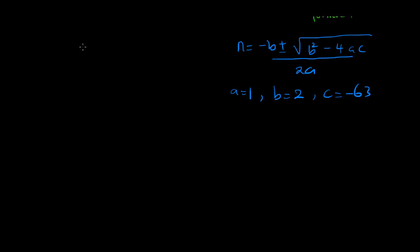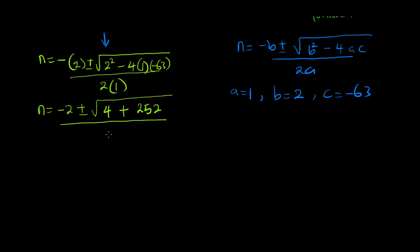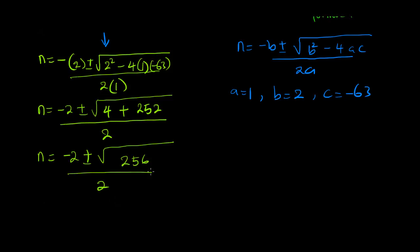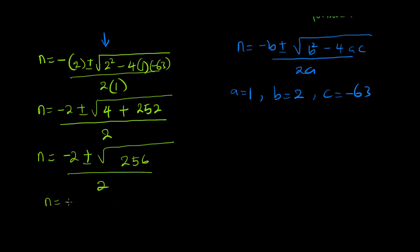Applying the quadratic formula: n equals minus b plus or minus √(b² minus 4ac), all over 2a. Substituting: n equals minus 2 plus or minus √(4 minus 4 times 1 times minus 63), all over 2. The discriminant becomes 4 plus 252 equals 256, and √256 equals 16.